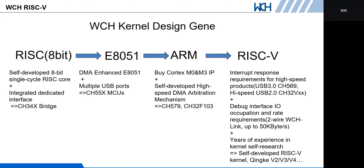So far we have self-developed RISC-V kernels such as QingKe v2, v3, v4, and v5, which are used inside chips such as USB3 CH569, general-purpose MCU CH32V series, and our Bluetooth MCUs CH573, CH583, and CH585.